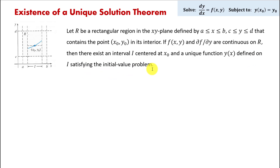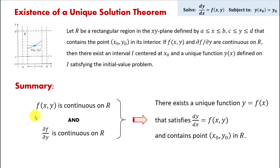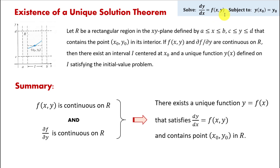To help you better understand what the theorem says, here's a quick summary. The theorem is saying: if f of xy is continuous on R — what is that function f of xy? In the initial value problem we're solving a first-order differential equation. This is its general form: on the left we have the first derivative, and on the right-hand side we have a function of x and y. When we look at actual examples, the right-hand side looks like an expression involving x and y. That's the function the theorem is referring to.